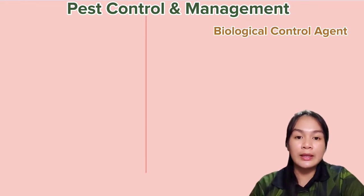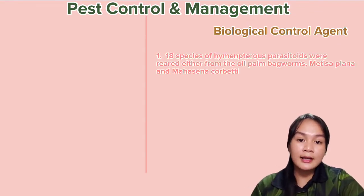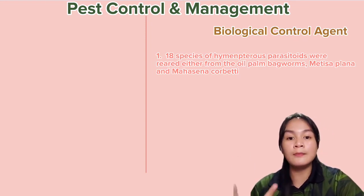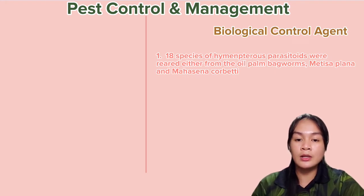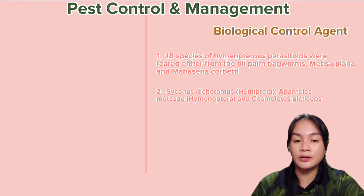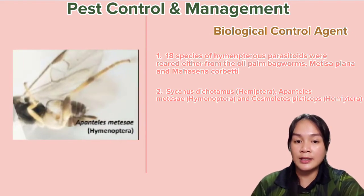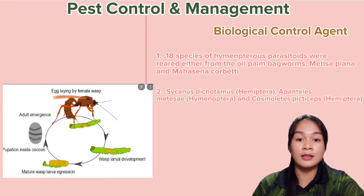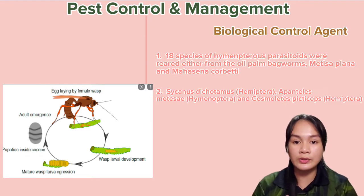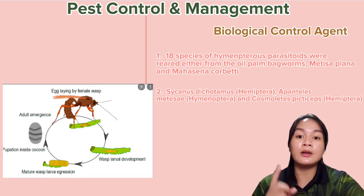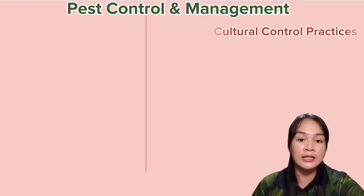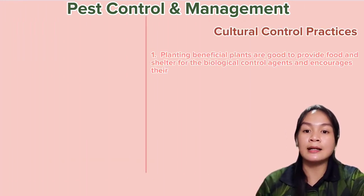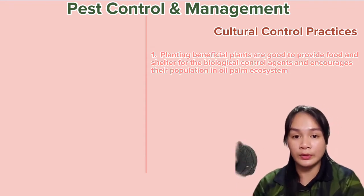The second control method is biological control. In Peninsular Malaysia, 18 species of Hymenoptera parasitoids were reared either from oil palm bagworms — Metisa plana and Mahasena corbetti — or from their parasitoids. Both Metisa plana and Mahasena corbetti share common parasitoids such as Sycanus dichotomus, Apanteles metesae, and Cosmolaelaps species. A parasitoid is an organism that spends its larval stage in or on another organism, known as the host. The larval parasitoid feeds only on the host and eventually kills it.